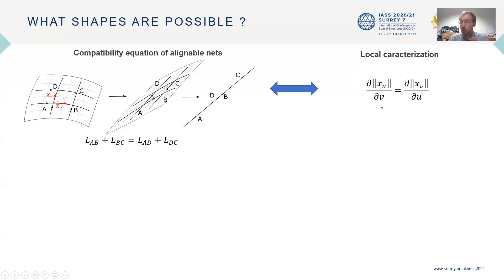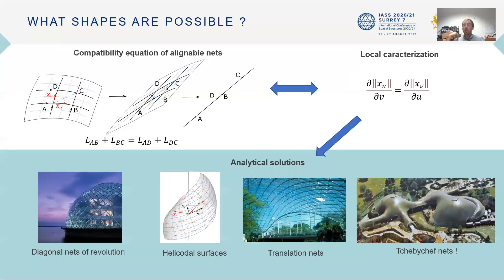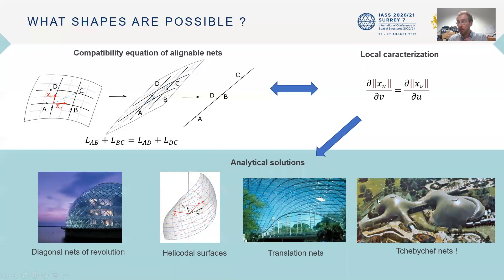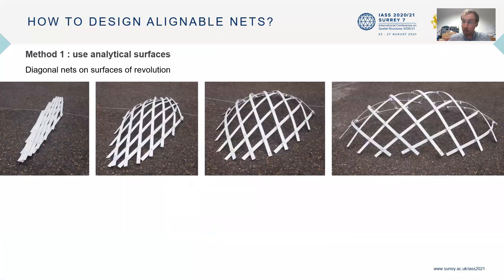This equation is quite convenient because it allows us to look for analytical solutions, and we see that many popular primitives in architecture are actually alignable — like diagonal nets of revolution, helicoidal nets, translational nets, and Chebyshev nets, which appear as a sub-case of the theory.